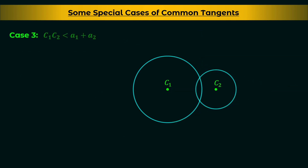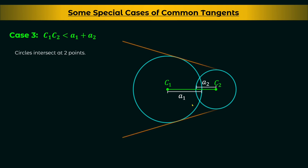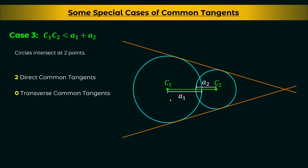In the third case, C1C2 < A1 + A2 — the distance between the centers is less than the sum of the radii. In this case the circles intersect at two points. You can draw two direct common tangents and no transverse common tangents — or in other words, the transverse common tangents are imaginary and not real.